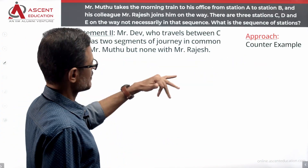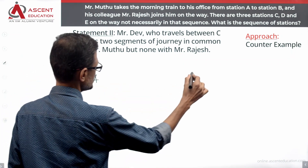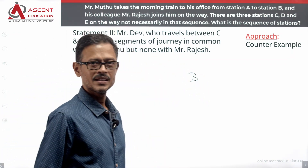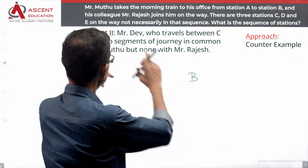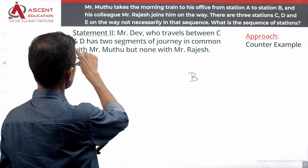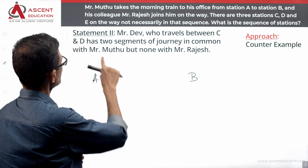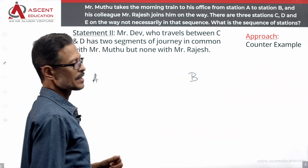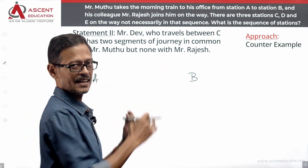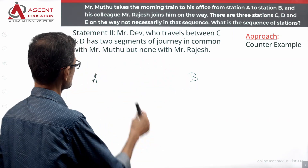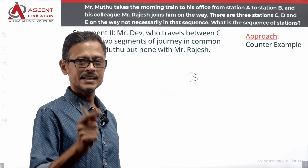Now let's evaluate statement two. The information given is that Mr. Dave travels between C and D, and he has two segments of the journey in common with Mr. Muthu, but none in common with Mr. Rajesh. Dave travels between C and D.